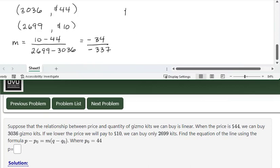Okay, so the equation would be p take away the p coordinate of 44 is equal to the slope, that's positive 34 over positive 337 - those two negatives will cancel - times q minus the q coordinate for that point with a 44, which is 3,036.